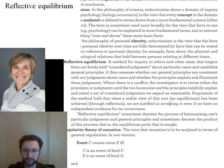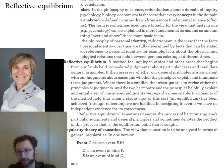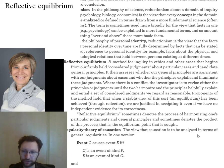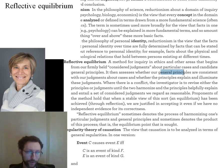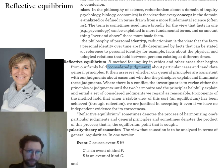You take your considered judgments and some candidate principles — possible explanations of what's going on — combine them and see how it works out. If it works out, you're good to go; if it doesn't, something has to change. As I said at the beginning, this is what a lot of the things we're reading are doing. Wolf is a good example of this. Sometimes people don't say explicitly that something has to change — they just say 'we must reject this principle because it doesn't fit this judgment' — but that's basically reflective equilibrium. It's a methodology for doing philosophy.